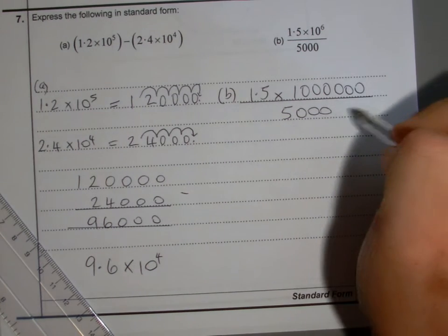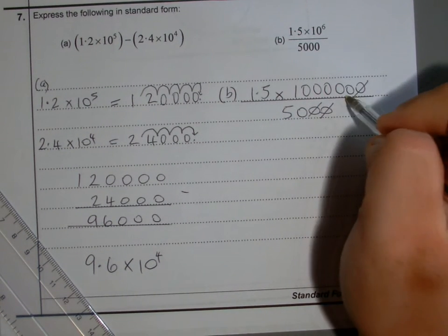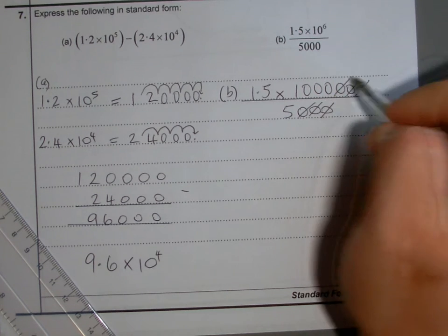And I've got 5,000 on the bottom. What I like to do then is cancel these zeros - that zero cancels with that zero, this zero cancels with that zero, and this zero cancels with that zero.